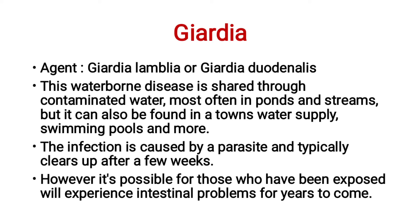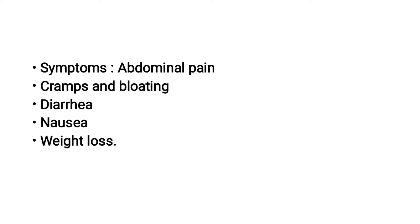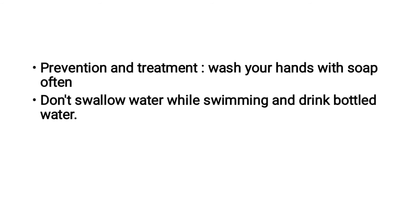Next, Giardia. The causative agent is Giardia lamblia, also known as Giardia duodenalis. This waterborne disease is spread through contaminated water, most often found in ponds and streams, but it can also be found in a town's water supply, swimming pools, and more. The infection is caused by this parasite and typically clears up after a few weeks, though it is possible for those exposed to experience intestinal problems for years. Symptoms include abdominal pain, cramps, bloating, diarrhea, nausea, and weight loss. Prevention: wash your hands with soap often, don't swallow water while swimming, and drink bottled water.